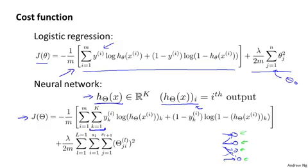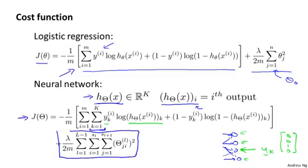And so you notice in particular that this applies to YK, HK because we're basically taking the K output units and comparing that to the value of YK which is that one of those vectors saying what class it should be. And finally, the second term here is the regularization term similar to what we had for logistic regression.